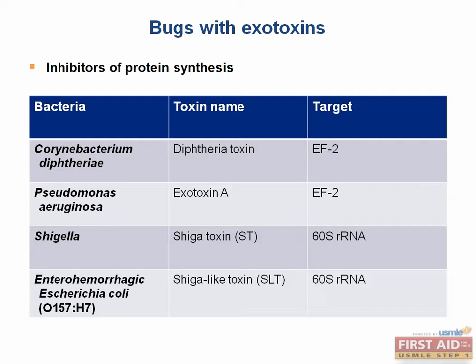These toxins have two components. The B component facilitates binding of the toxin to its target host cell. The A component is the active subunit, and it attaches an ADP-ribosyl group to the host protein, which effectively alters the protein's function.